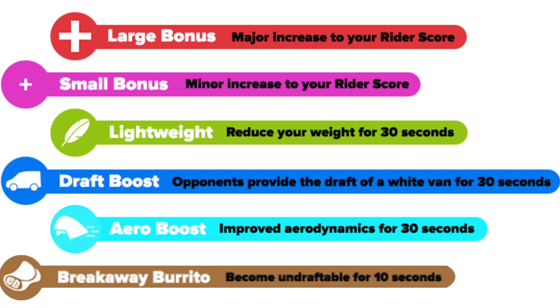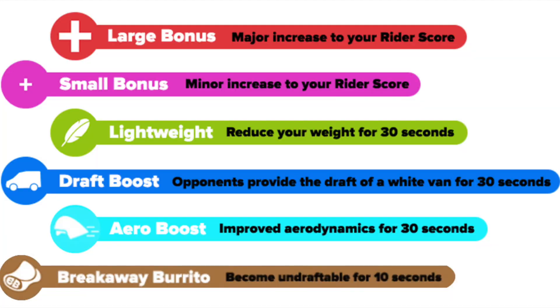There's a green circle with a feather in it — that one's much sought after. It will reduce your rider weight for 15 seconds, making it easier for you to go up the hill. It absolutely makes things easier, so you should use it on a hill when trying to keep up with the group. The draft boost is the darker blue circle with a picture of a van in it. That gives you 30 seconds where your opponents are creating a larger draft that you enjoy for 30 whole seconds.